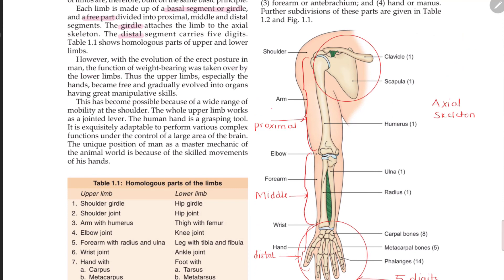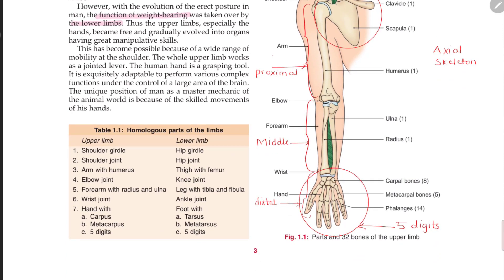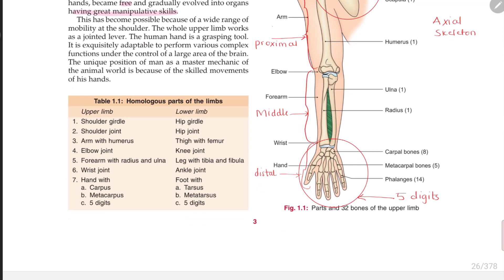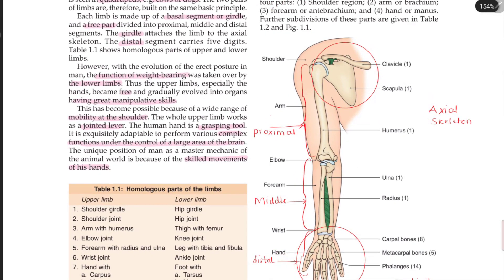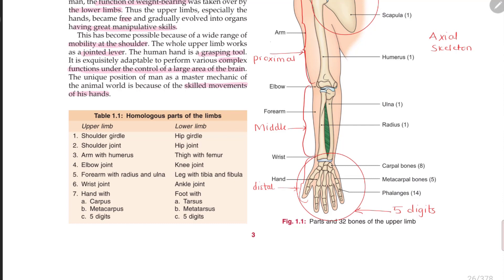The evolution of erect posture has given the function of weight bearing to the lower limbs. Thus upper limbs, especially the hands, have become free and are more for manipulative skills. Because of this particular girdle, there is wide range of mobility to the shoulder. The whole upper limb works as a jointed lever and the hand works as a grasping tool. These complex functions are under the control of the brain. Our skilled movements make us different from the animals.